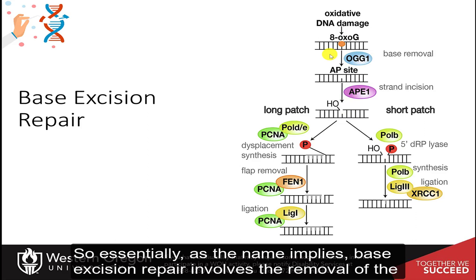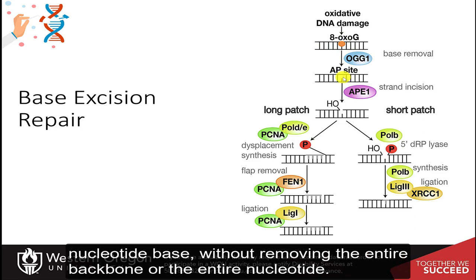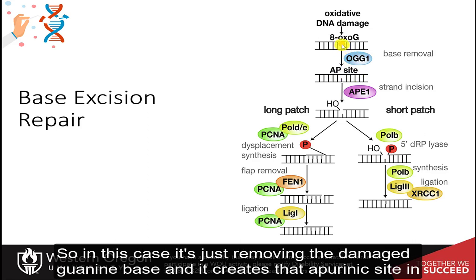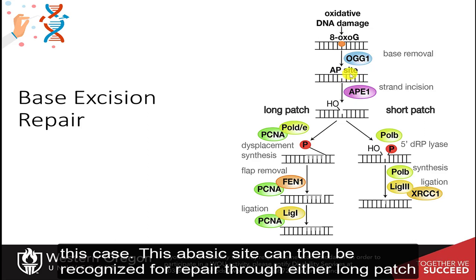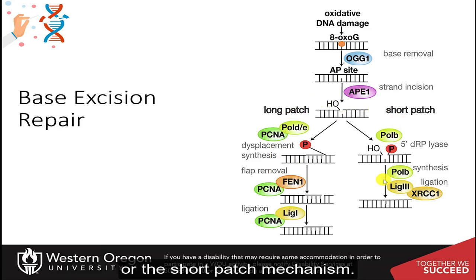As the name implies, base excision repair involves the removal of the nucleotide base without removing the entire backbone or the entire nucleotide. In this case, it's just removing the damaged guanine base, creating an apurinic site. This abasic site can then be recognized for repair through either the long patch or the short patch mechanism.